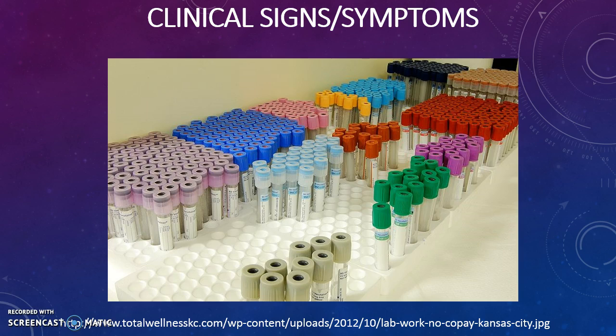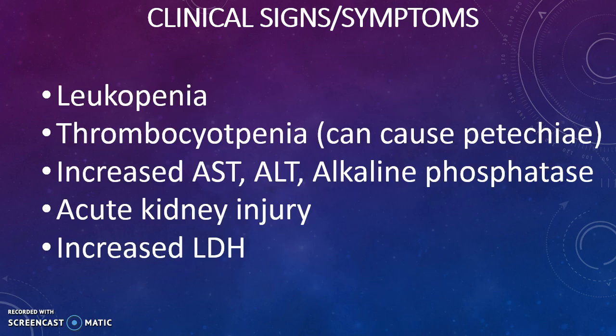The lab findings are much more interesting, but still nonspecific. This means you have one of two choices: keep a high index of suspicion during the summer months in areas with these ticks, or just quit medicine altogether. Laboratory signs include leukopenia, thrombocytopenia — which can cause a petechial type of rash — increased AST, ALT, and alkaline phosphatase, acute kidney injury, and possibly an increase in LDH.